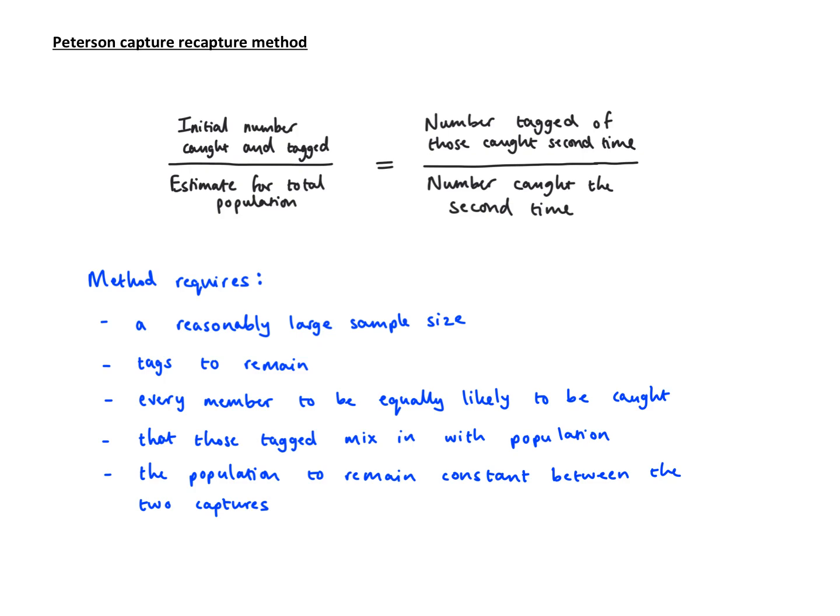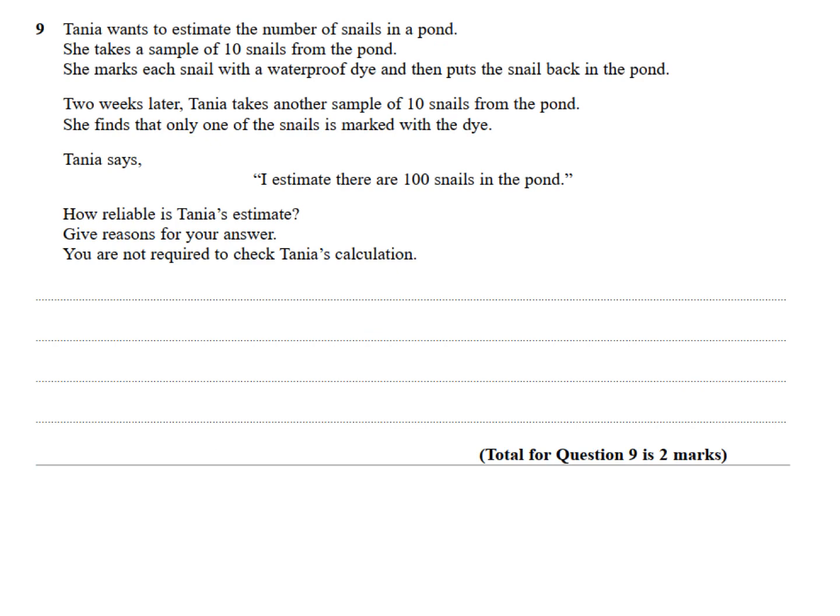Let's look at some questions. Tanya wants to estimate the number of snails in a pond. She takes a sample of 10 snails from the pond, marks each snail with a waterproof dye, then puts the snail back in the pond. Two weeks later, Tanya takes another sample of 10 snails from the pond. She finds that only one of the snails is marked with the dye. So one out of 10 was marked, and the first time she only took 10 as well. Let's see what her estimate comes up to.